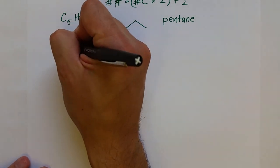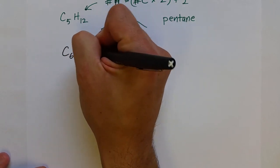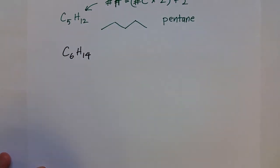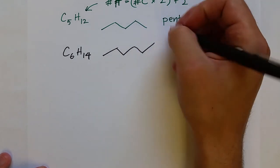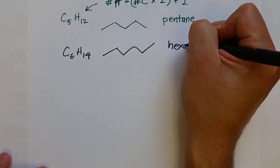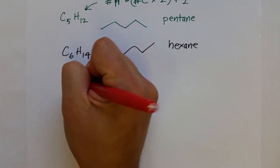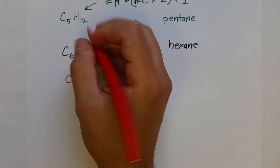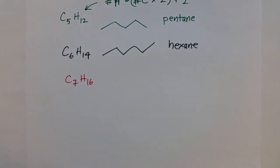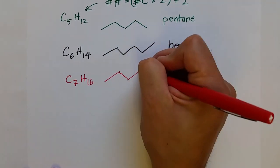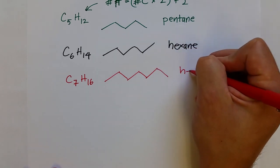Next, we've got hexane coming in at six carbons. Six times two is twelve, plus two is fourteen: C6H14. One, two, three, four, five, six — hexane. Then the hydrocarbon with seven carbons would be heptane: C7H16. One, two, three, four, five, six, seven — heptane.